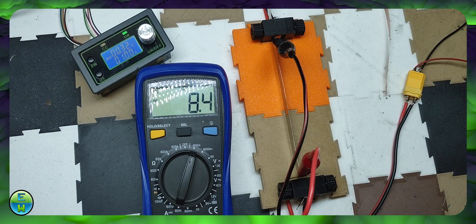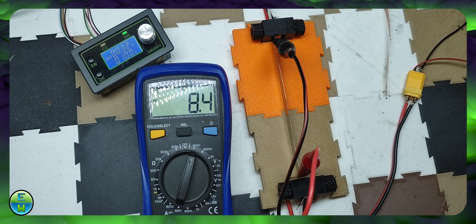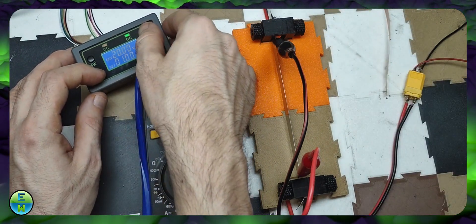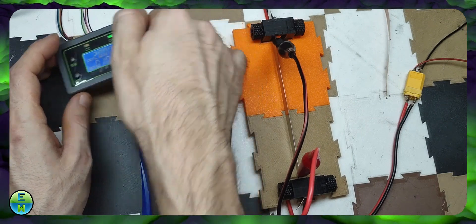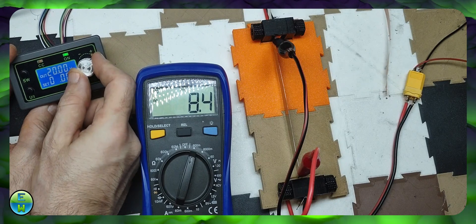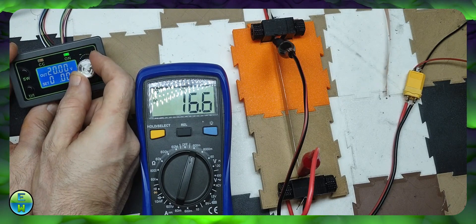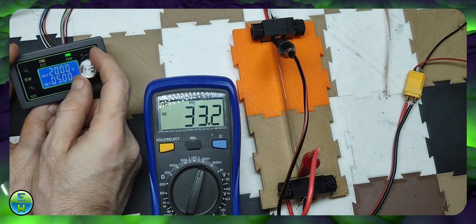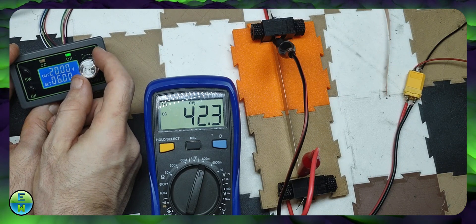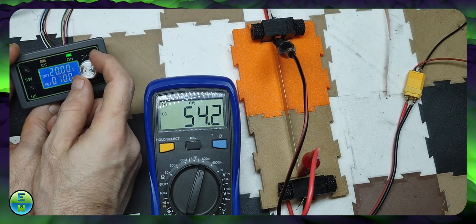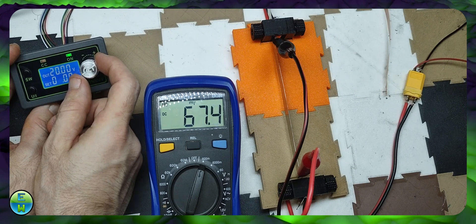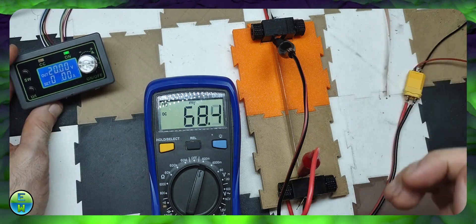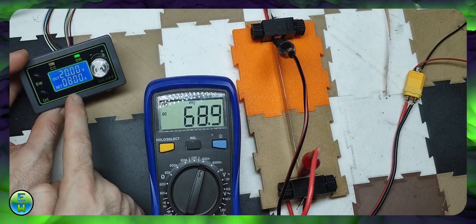I'm putting one amp into the strip and it's producing 8.4 millivolts of voltage drop. Now watch what happens when I increase the current. As you can see, the voltage drop across the strip is linearly proportional to the amount of current that's flowing through it.